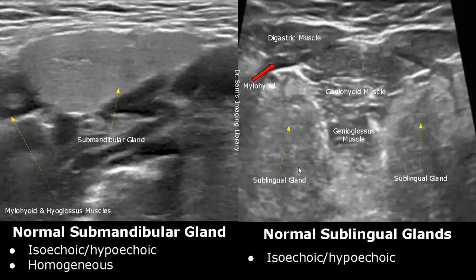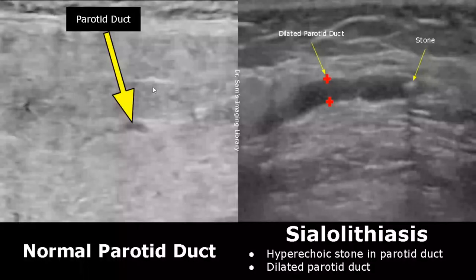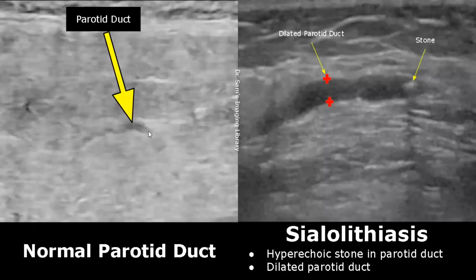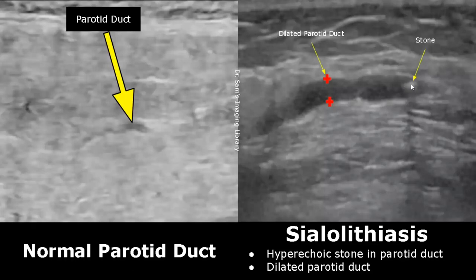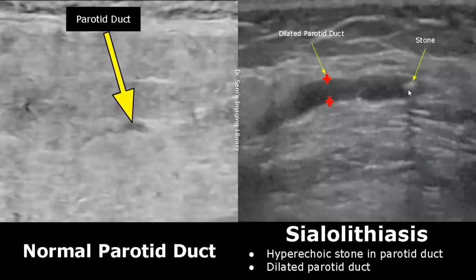Most pathologies involve the parotid and submandibular glands. In this image we can see a normal parotid duct with a small diameter. Sialolithiasis refers to presence of stones within the salivary gland ducts. We can see a hyperechoic stone within the parotid duct which has led to a dilated parotid duct. The stone is casting a posterior acoustic shadow. Stones are a common cause of dilated parotid duct.